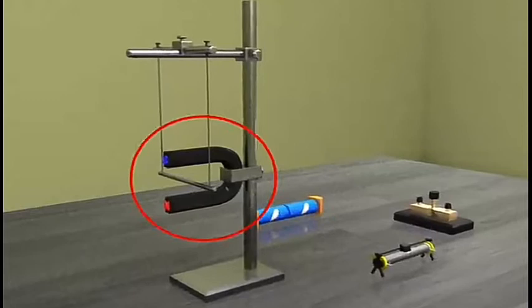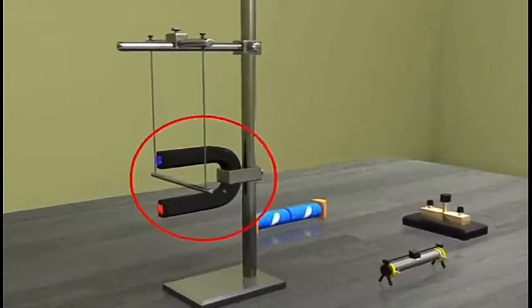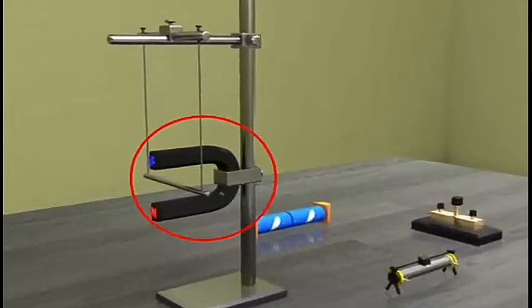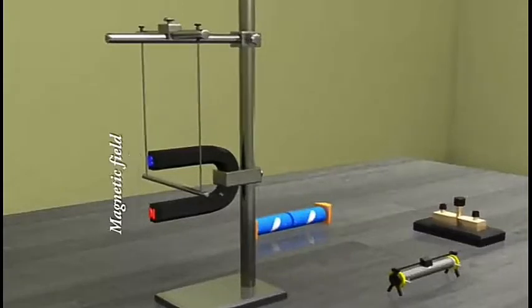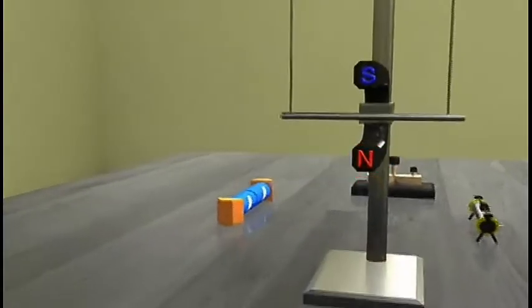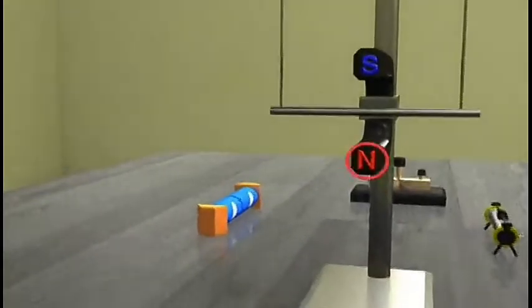See how the horseshoe magnet is placed around the rod. The magnet has been placed in such a way that the rod lies between the two poles with the magnetic field directed upwards. For this, the north pole of the magnet is placed vertically below, while the south pole is lying vertically above the rod.